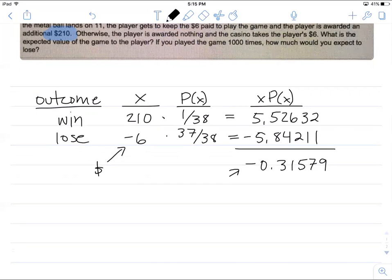The expected value of the game to the player would then be, if I round it to the nearest cent, negative 32 cents. Or if you had to enter it as a dollar value, you would put it in as negative 0.32, depending on how the question was asking you to format your answer.